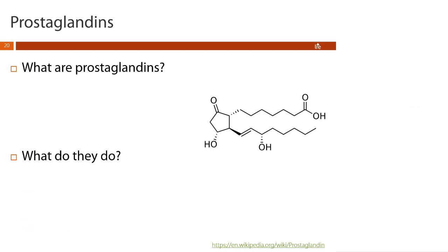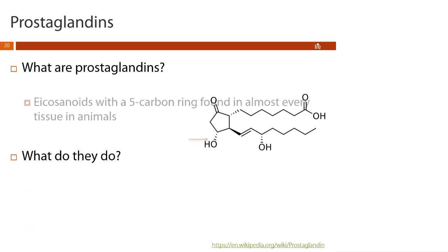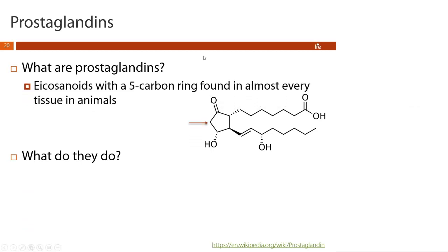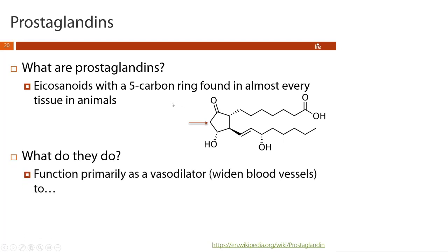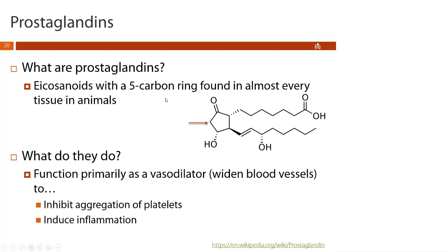Prostaglandins are eicosanoids with a five-carbon ring, and they are found in almost every tissue in animals. They primarily function as vasodilators, which widen blood vessels. This inhibits aggregation of platelets and induces inflammation.